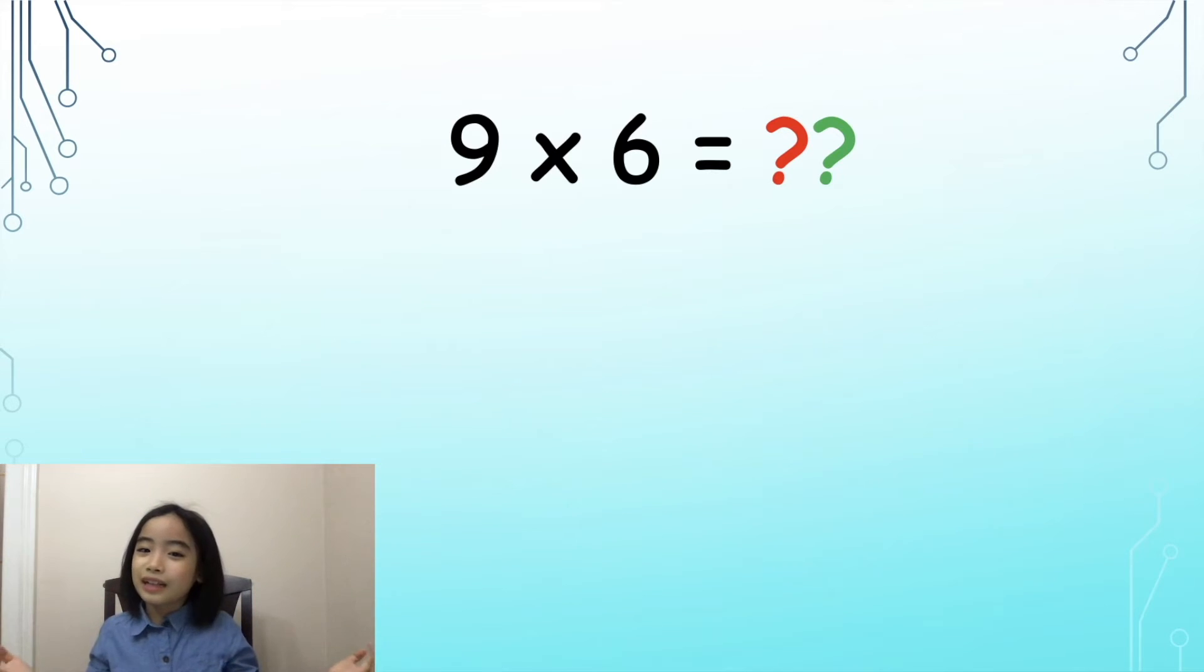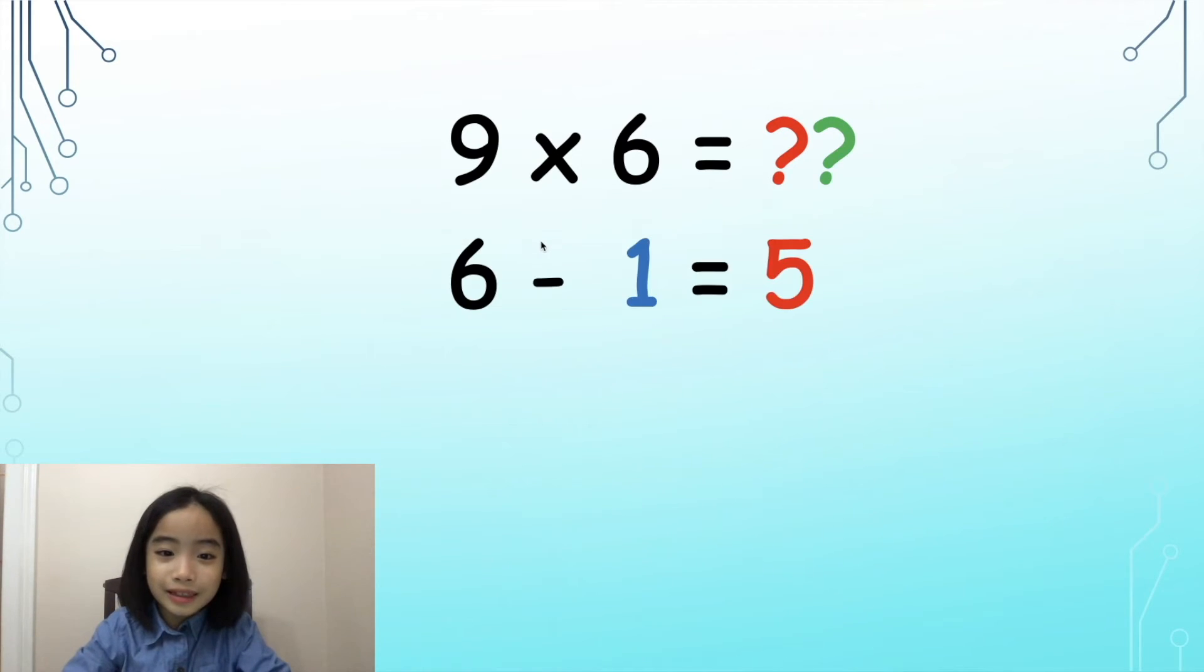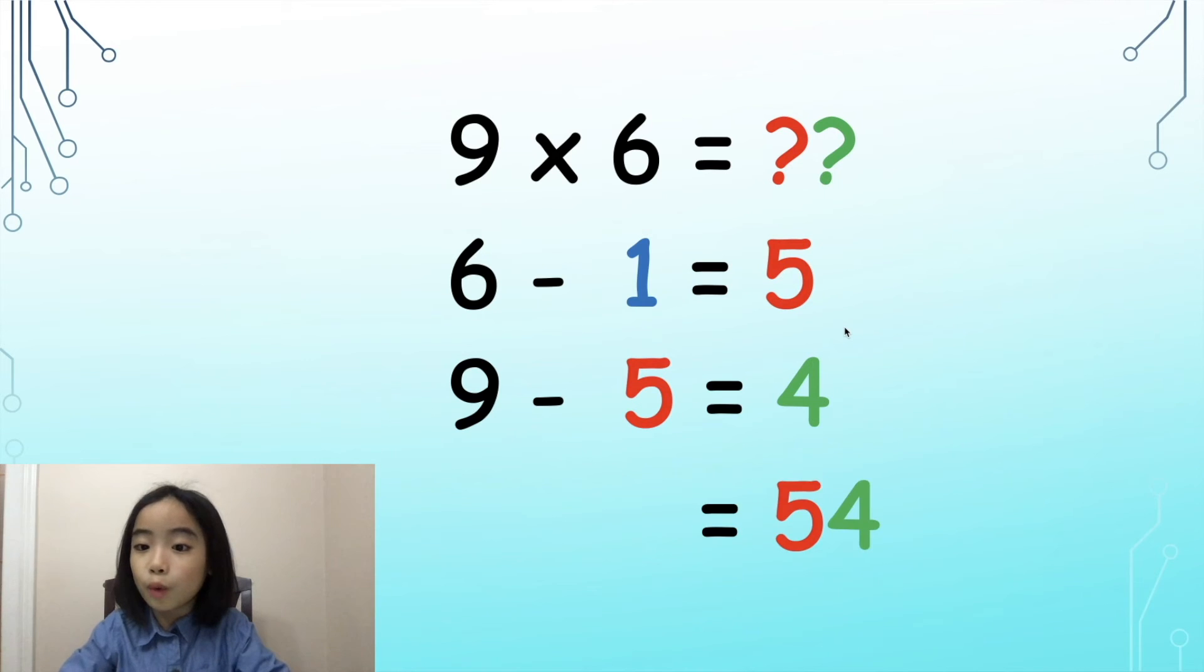Does this method apply to 9 times 6? Well, let's see! 6 minus 1 equals 5. So, we put the 5 in the tens position. 9 minus 5 equals 4. So, we put the 4 in the ones position. The answer is 54. This works!